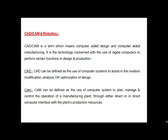Next we discuss CAD, CAM, and Robotics. CAD stands for computer-aided design, CAM stands for computer-aided manufacturing, and together with robotics, these three are used in combination in manufacturing industries. CAD can be defined as the use of computer systems to assist in the creation, modification, analysis, or optimization of a design. CAM can be defined as the use of computer systems to plan, manage, and control the operation of a manufacturing plant through either direct or indirect computer interface with the plant's production resources.